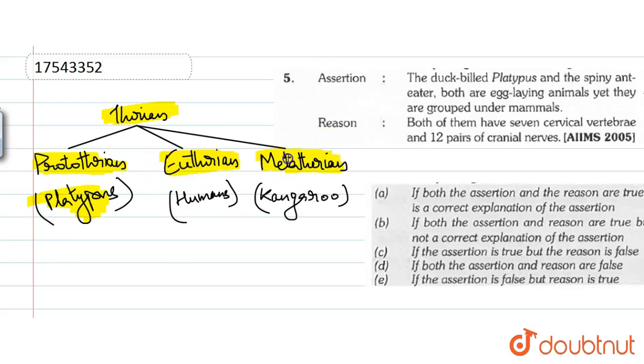And metatherian means kangaroos. They keep their characteristics with mammals and have additional characteristics like a special pouch in which the young child develops after birth. So that's why prototherian is a very primitive reptile-like mammal. They are not evolved as the other categories.